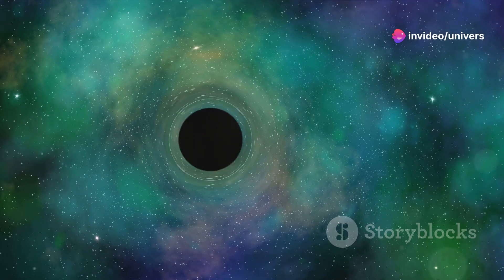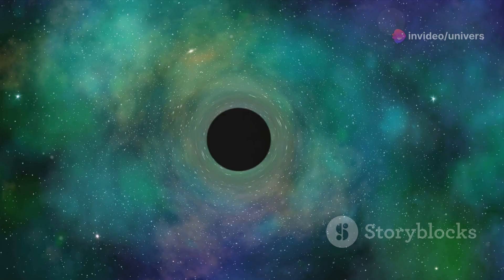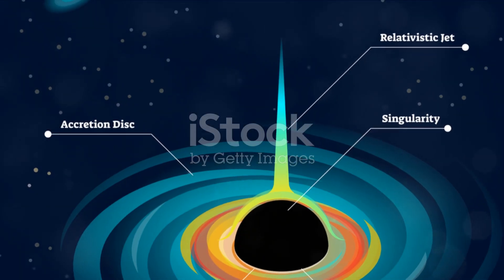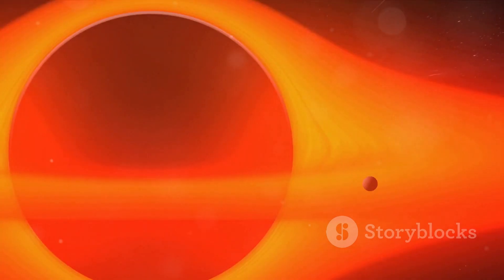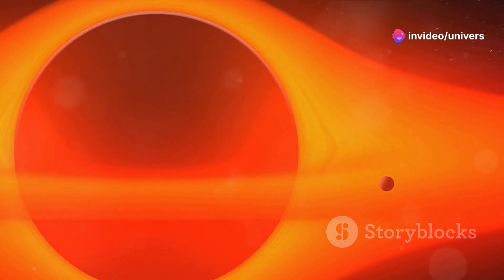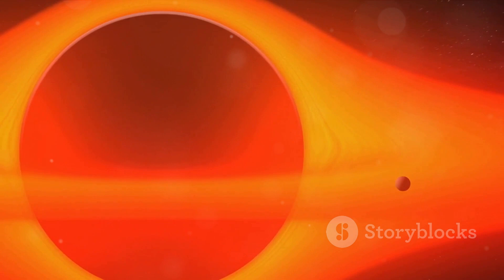Black holes may be invisible, but they are far from silent. They interact with nearby matter, causing it to emit X-rays, which can be detected by space-based telescopes. This is how astronomers first pinpoint potential black hole locations. They look for unusual X-ray sources, the cosmic signatures of black holes.